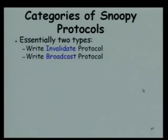Let us look at the different categories of snoopy protocol. There are essentially two categories: write-invalidate and write-broadcast. As homework, please think about what are the disadvantages of a directory protocol if it is implemented in an SMP. Now let us understand the two categories of snoopy protocol. The write-invalidate protocol: when a processor writes to its own cache, all other processors having a copy of that data block are asked to invalidate that block.